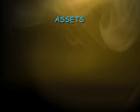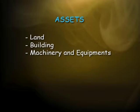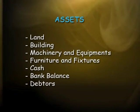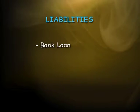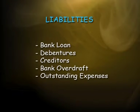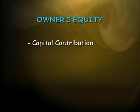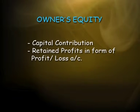Some examples of assets are land, building, machinery, equipment, furniture, cash, bank balance, and debtors. Some examples of liabilities are bank loan, debentures, creditors, bank overdraft, and outstanding expenses. Examples of owner's equity include capital contribution, retained profits in the form of profit or loss, and general reserve.